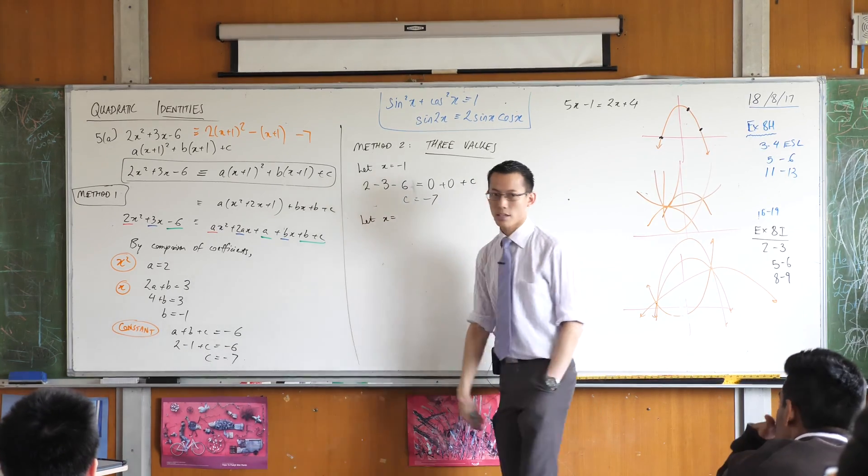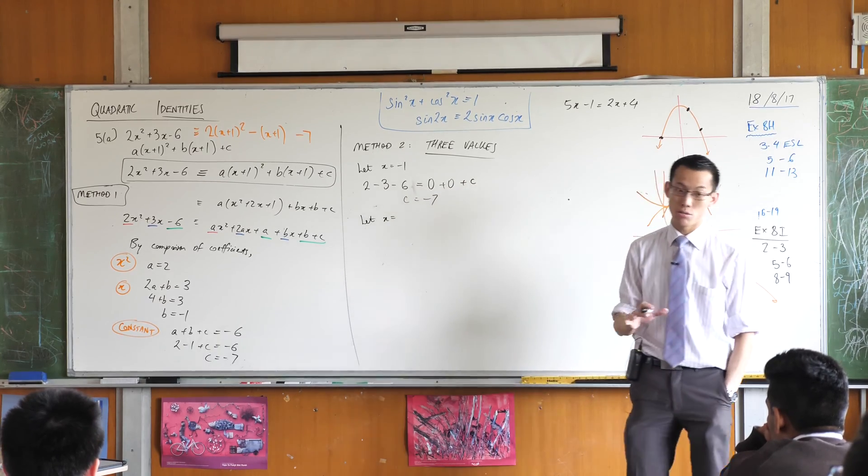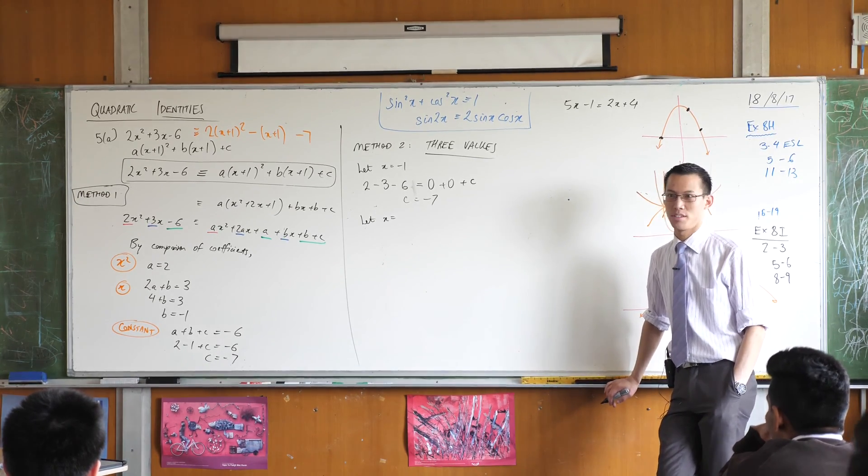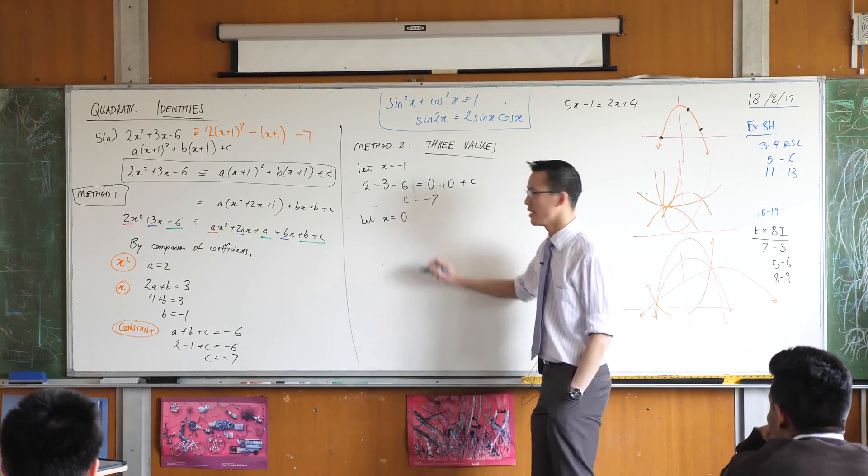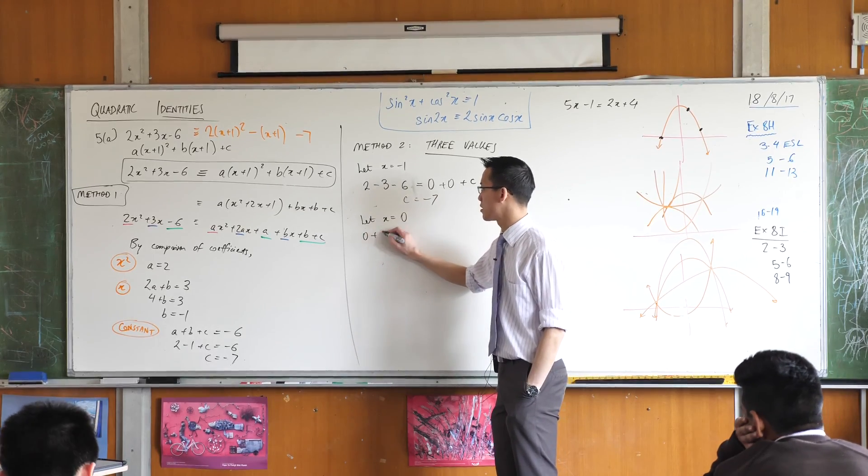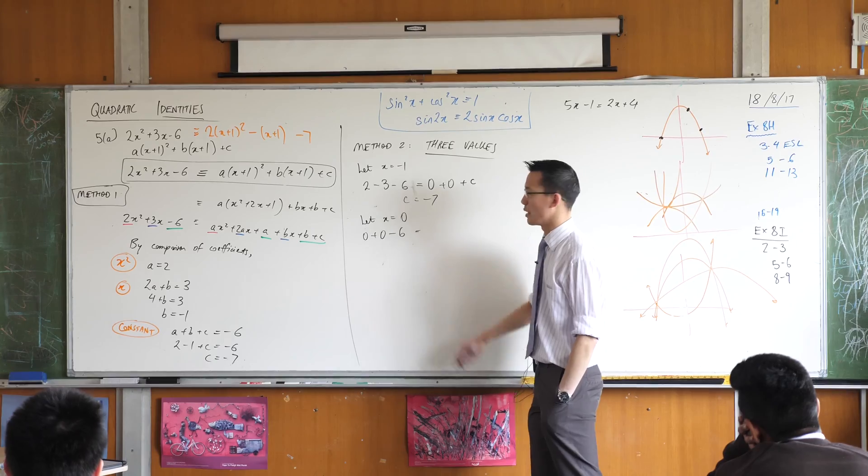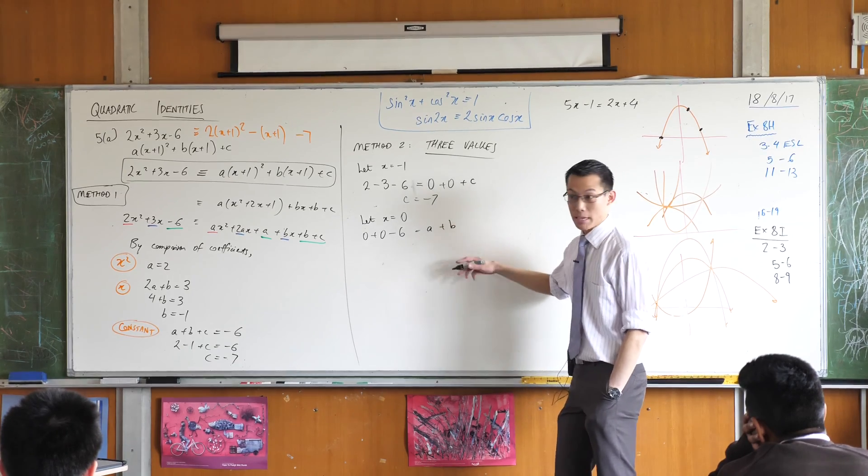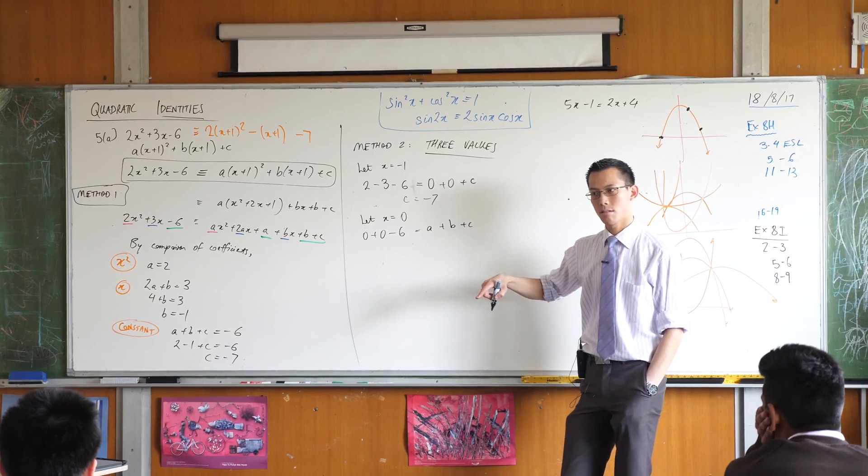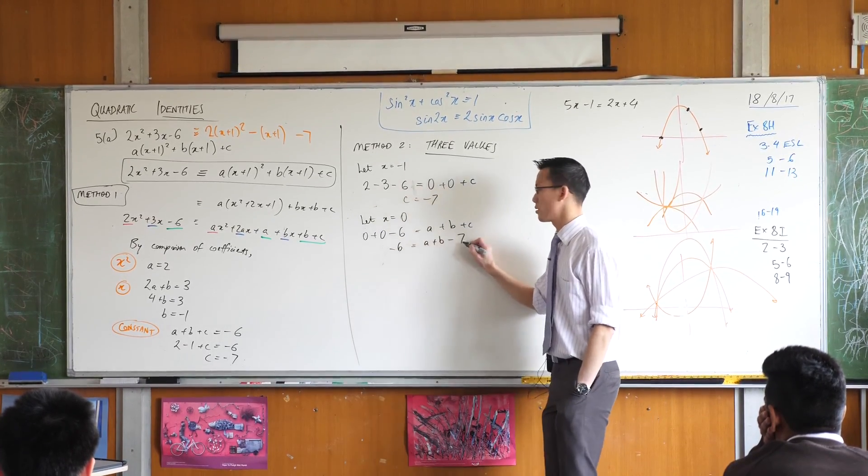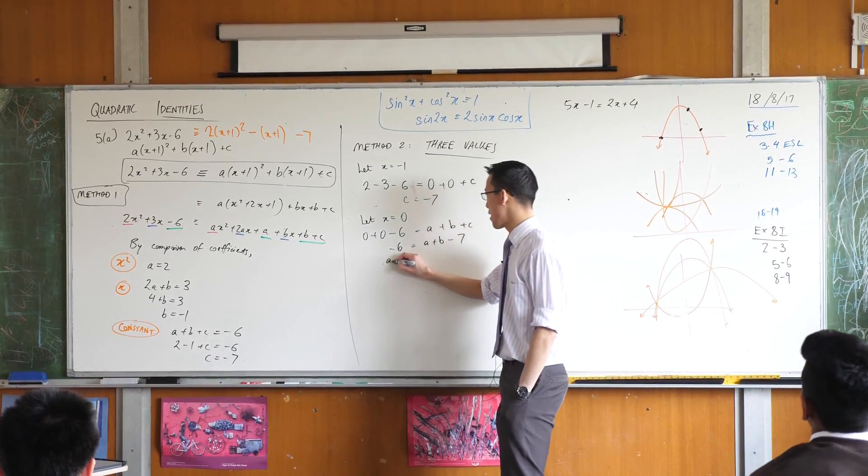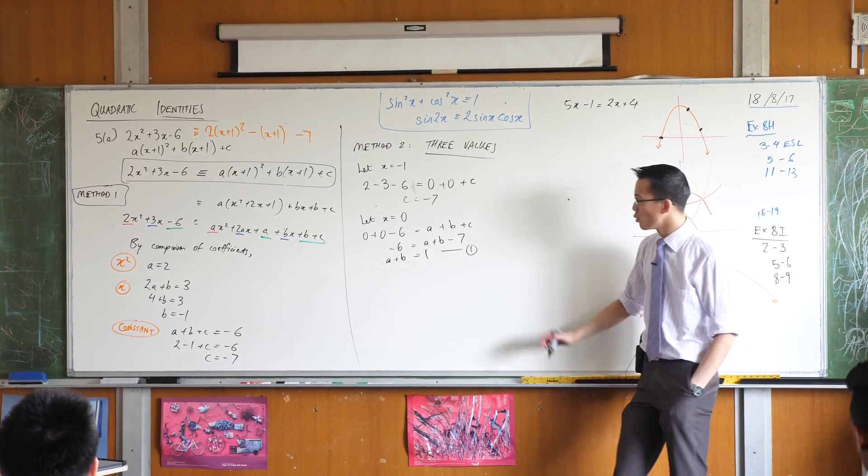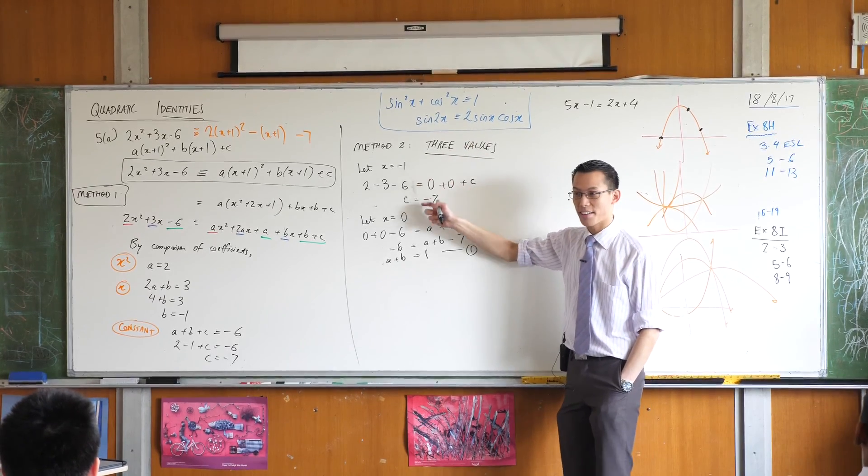I've only found one of the pronumerals though. I need to find the others. So I need to choose another value of x. This is completely up to me. I really literally can choose anything. I could choose like 423 if I wanted. I could choose pi, negative a million, but I want to choose easy numbers. Would you like to give me a suggestion? How about zero? If x is equal to zero, on the left-hand side it looks like I'm going to get zero plus zero minus six. On the right-hand side what will I get? A times one squared, which is a, plus b, because it's b times one, and then c. But I know what c is. So I've got negative six equals a plus b minus seven. So I have an equation.